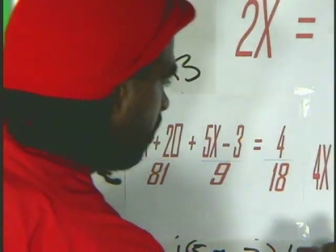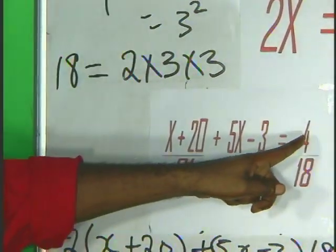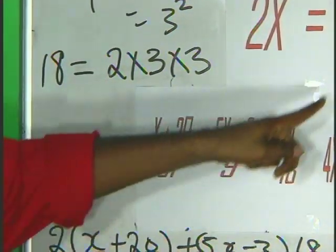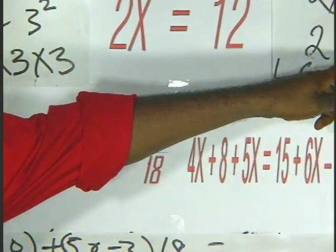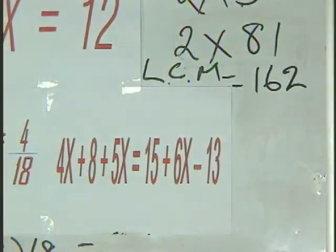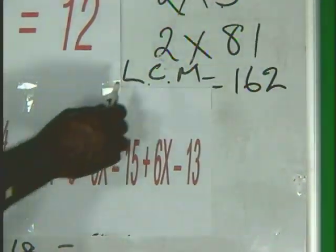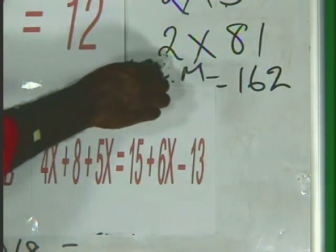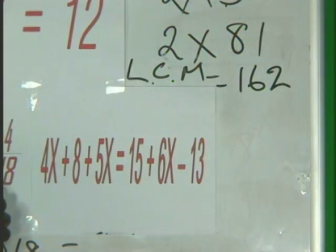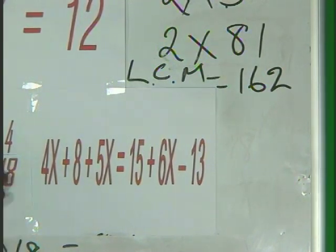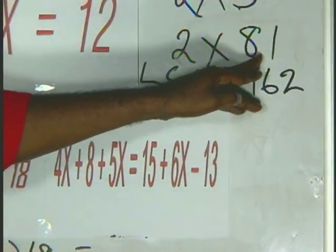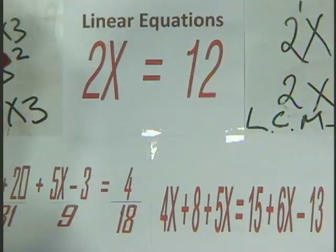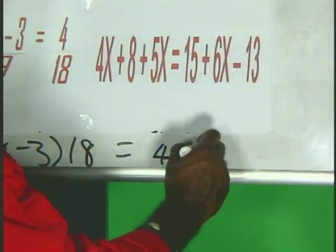And this is now going to be equal to 4 over 18 multiplied by 2 times 81. And as you can see, if this is used to multiply 4 over 18, then 2 into 18 goes 9, and 9 into 81 goes 9. So, what you'll be left with over here is 4 multiplied by 9.